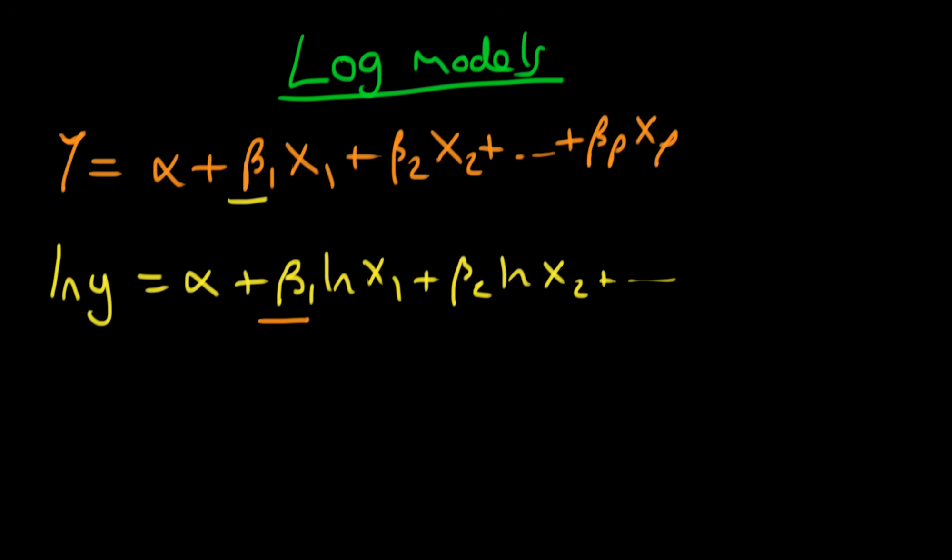If we differentiate or find the differential of both sides, then we find that dy over y is equal to beta 1 times dx1 over x1. I'm assuming that all the other variables are constant and the only thing we're varying is x1. When we differentiate logs we always get one over that variable, so that's why we've got dy divided by y equals beta 1 times dx1 over x1.